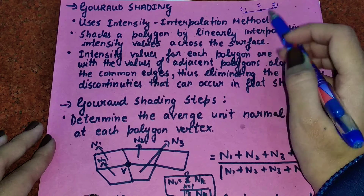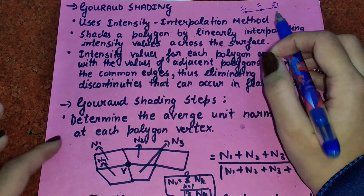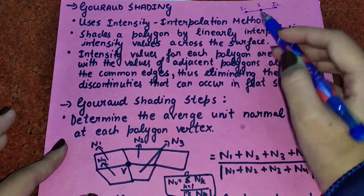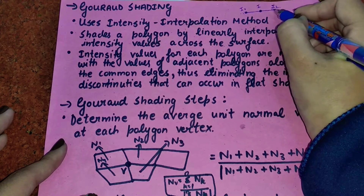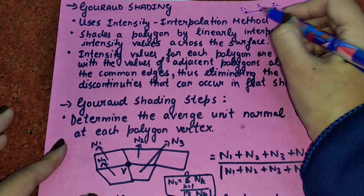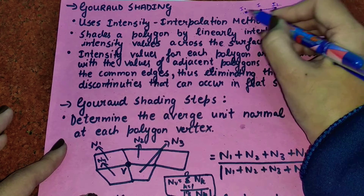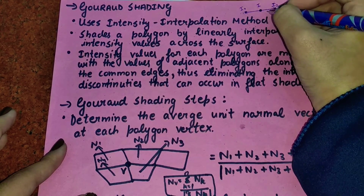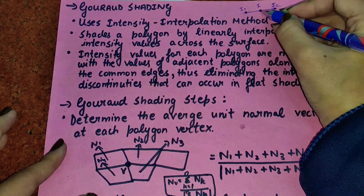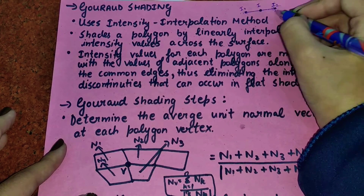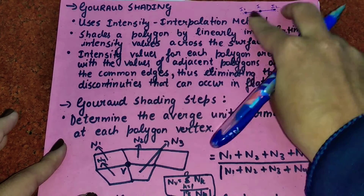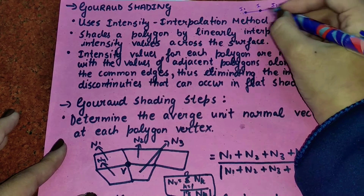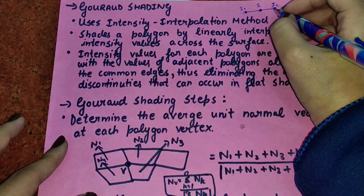Gouraud shading uses the intensity interpolation method. Interpolation is a mathematical method. Intensity interpolation means that if we know the intensity at two points, then for any point between those two points we can find the approximate intensity. If I know the intensity of two points, I can find the intensity of any point that lies in between them.